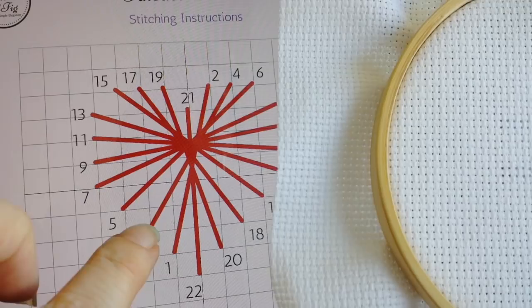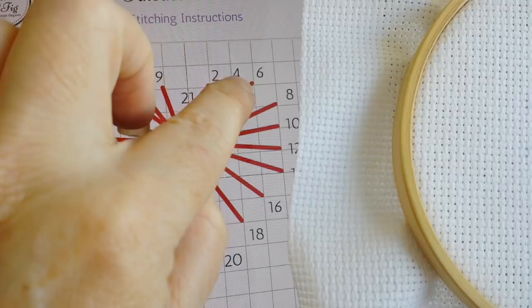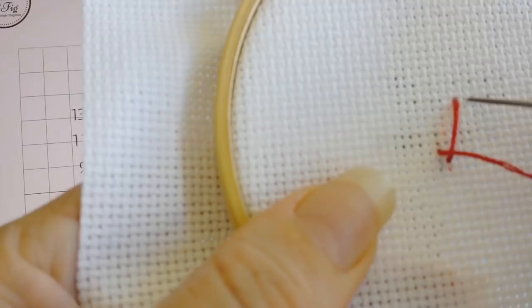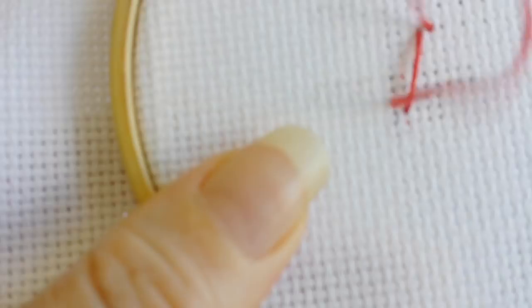Next stitch is number three, and you're going to go diagonally up one from number one, and you're going to go next to number two. So the trick is with this, if you're doing it for the first time, just follow the instructions and go really slowly, and that way you're not going to make any mistakes. All right, and then you're going over one here. All right, so that's your second strand.